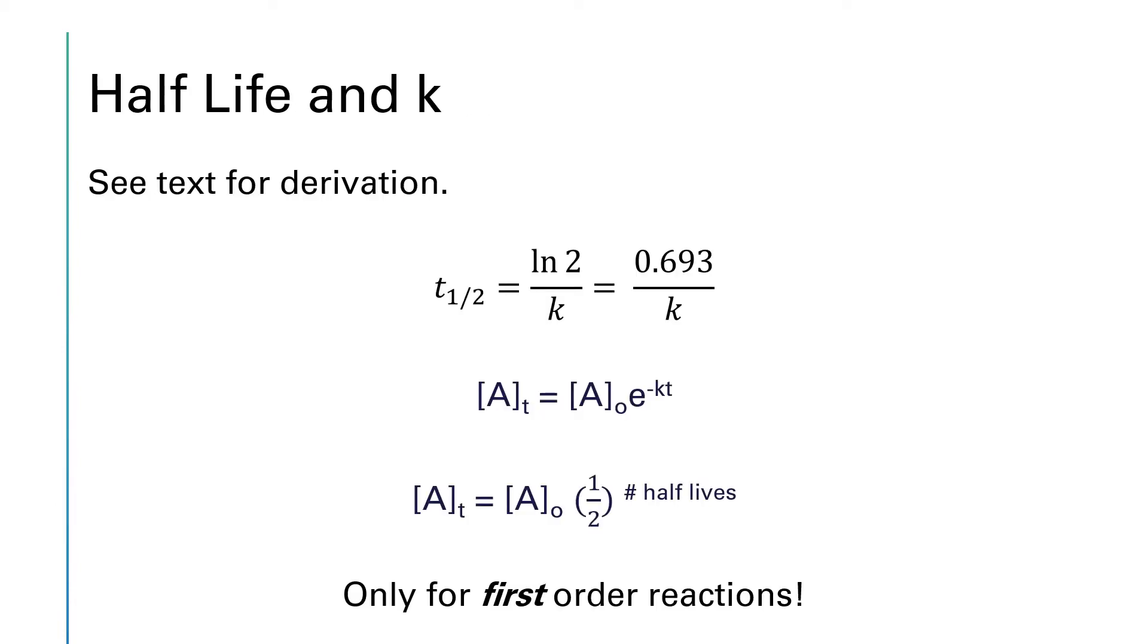There is a mathematical formula that will link half-life and k. The derivation of this is given in your textbook. So if you're interested in how these formulas come about, I strongly recommend you go and read that. The half-life is given by the natural log of 2 divided by k. And if you were to run natural log of 2 through your calculator, you'd find that that number is 0.693.